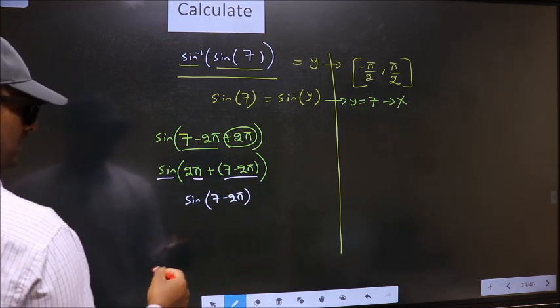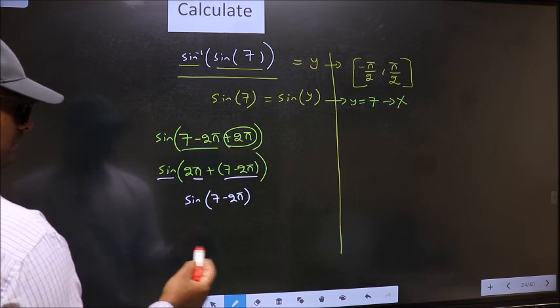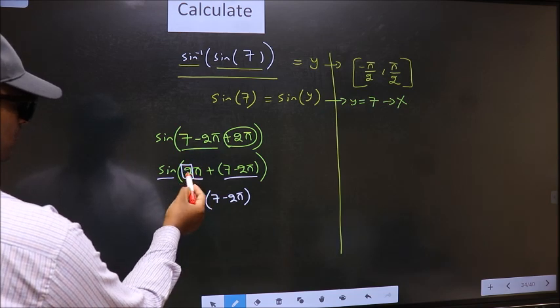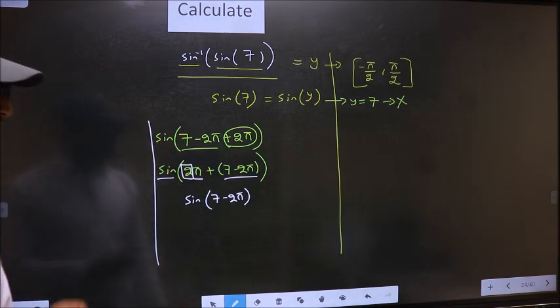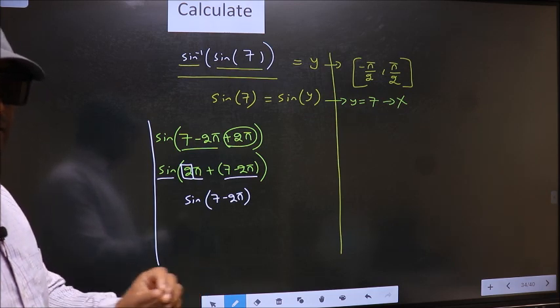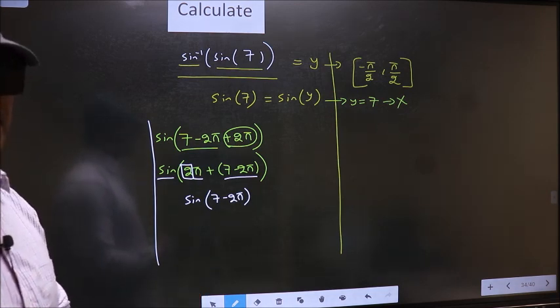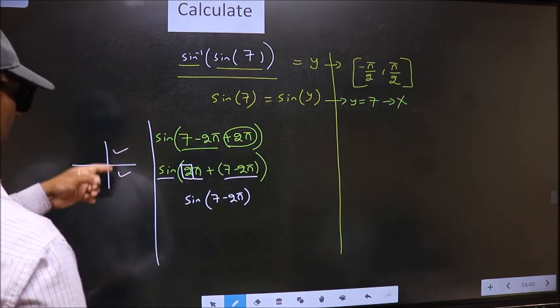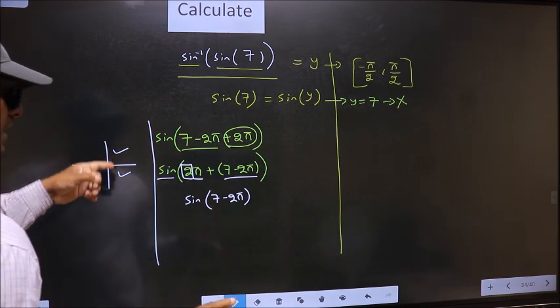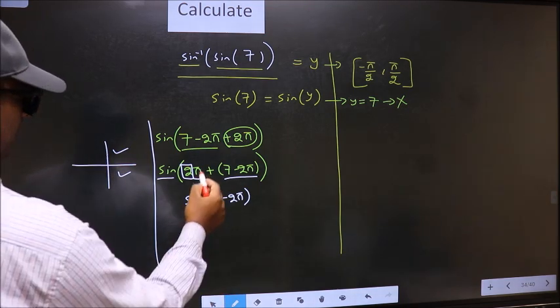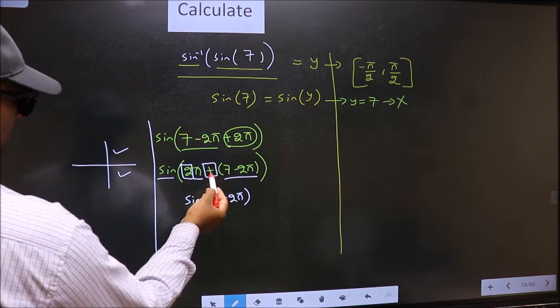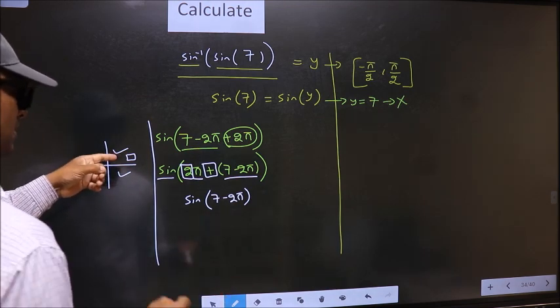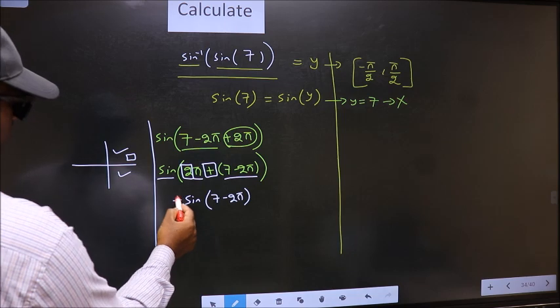And now the question is will we get here plus or minus. To answer that we should look at the number before π which is 2, and 2 is even. And all the even multiples of π they lie in either the first or the fourth quadrant. So now to select the quadrant we should look at this symbol. Here we have plus, that means angle lies in the first quadrant, and in the first quadrant sign is positive. So put plus.